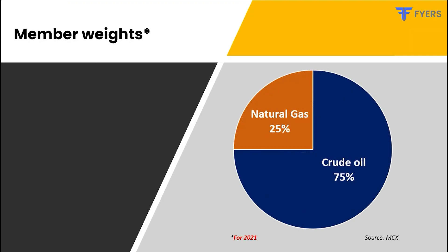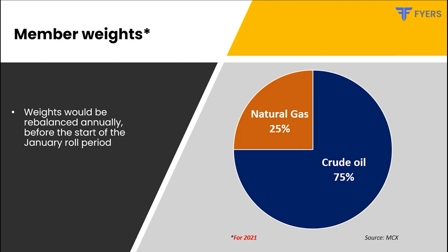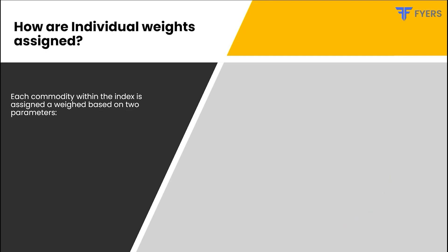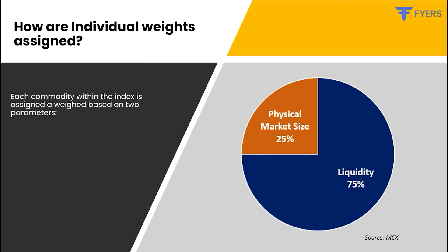Crude oil constitutes 75% of the index weight while natural gas constitutes the remaining 25%. Keep in mind that these weights are not permanent. The index is rebalanced at the start of the January roll period, and the exchange announces the new weights three months in advance, i.e., in October. The individual weights are determined based on two parameters: liquidity and economic importance of the commodity.